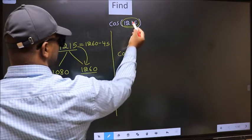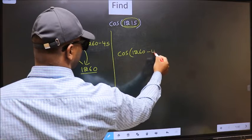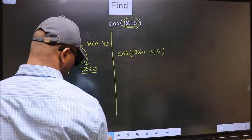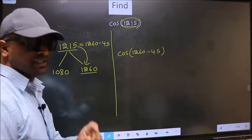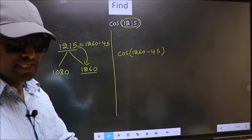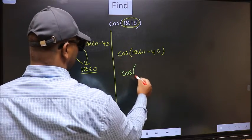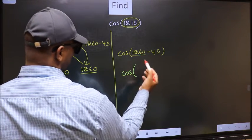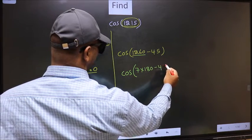In place of this we write 1260 minus 45. This is your step 1. Next, in place of 1260 we should write 7 into 180 minus 45.